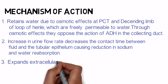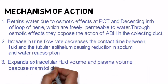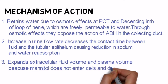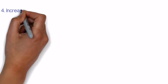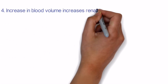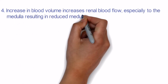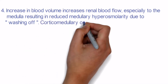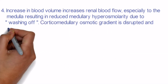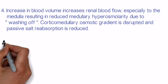Third, mannitol expands extracellular fluid volume and plasma volume because it does not enter cells and draws water from the intracellular compartment. Fourth, increase in blood volume increases renal blood flow, especially to the medulla, resulting in reduced medullary hyperosmolarity due to washing out of the corticomedullary osmotic gradient, and passive salt reabsorption is reduced.